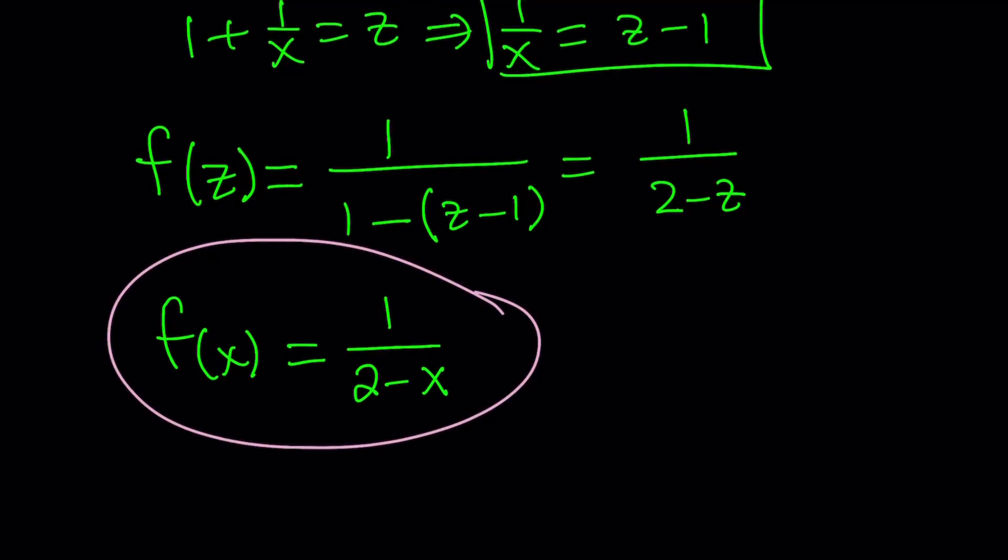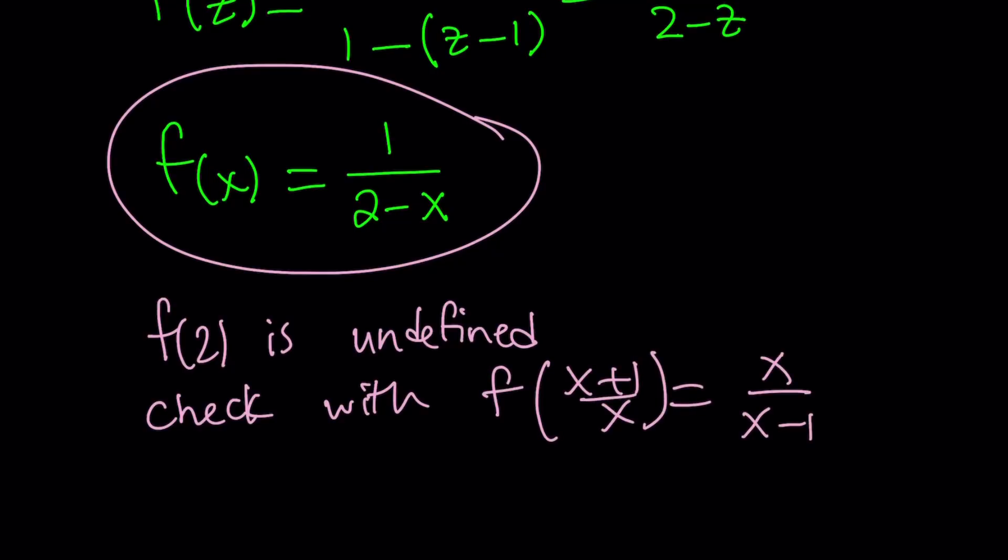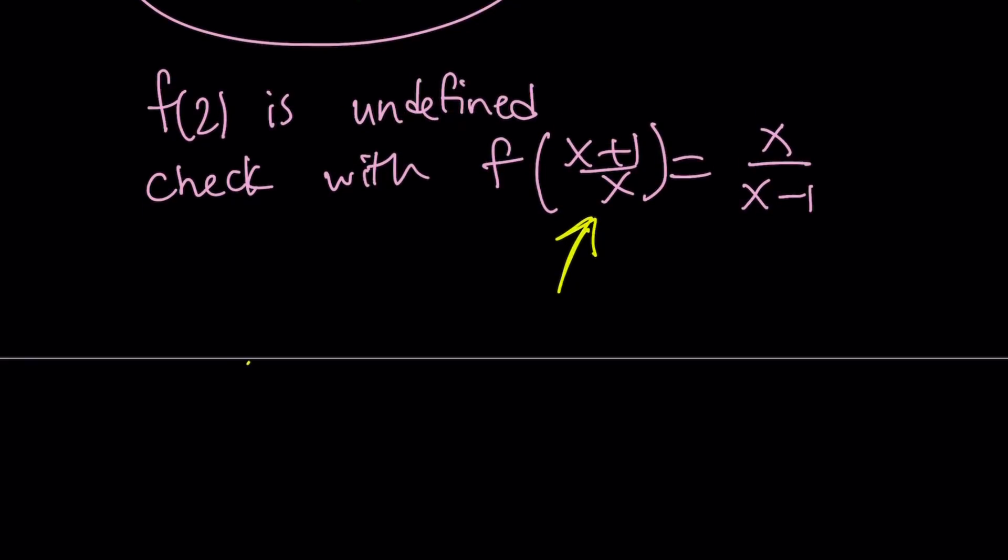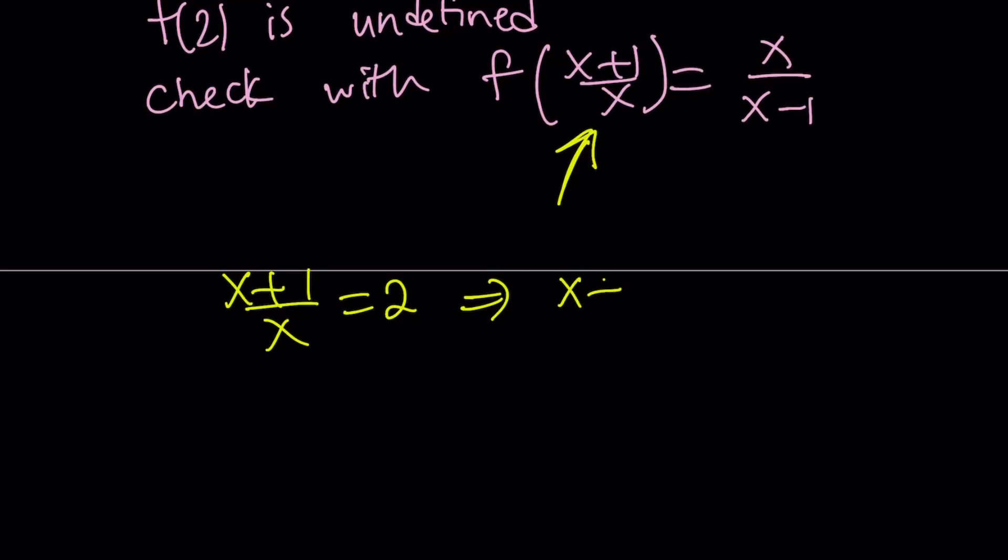Great. Now let's go ahead and take a look at a couple different values. For example, in this function f of 2 is undefined, right? So you can't really replace x with 2 because that's going to make it undefined. Well let's go ahead and check this with the original function. Let's check with f of x plus 1 over x equals x over x minus 1. Since we said that f of 2 is undefined, it should be the same here. But how do you find f of 2 from here? That's a good question. To find f of 2 from here you have to replace x plus 1 over x with 2. Let's go ahead and replace it with 2. From here we get x plus 1 equals 2x and x equals 1. Now you're going to use that value on the right hand side, but uh oh, you can't do it because that's going to make it undefined.